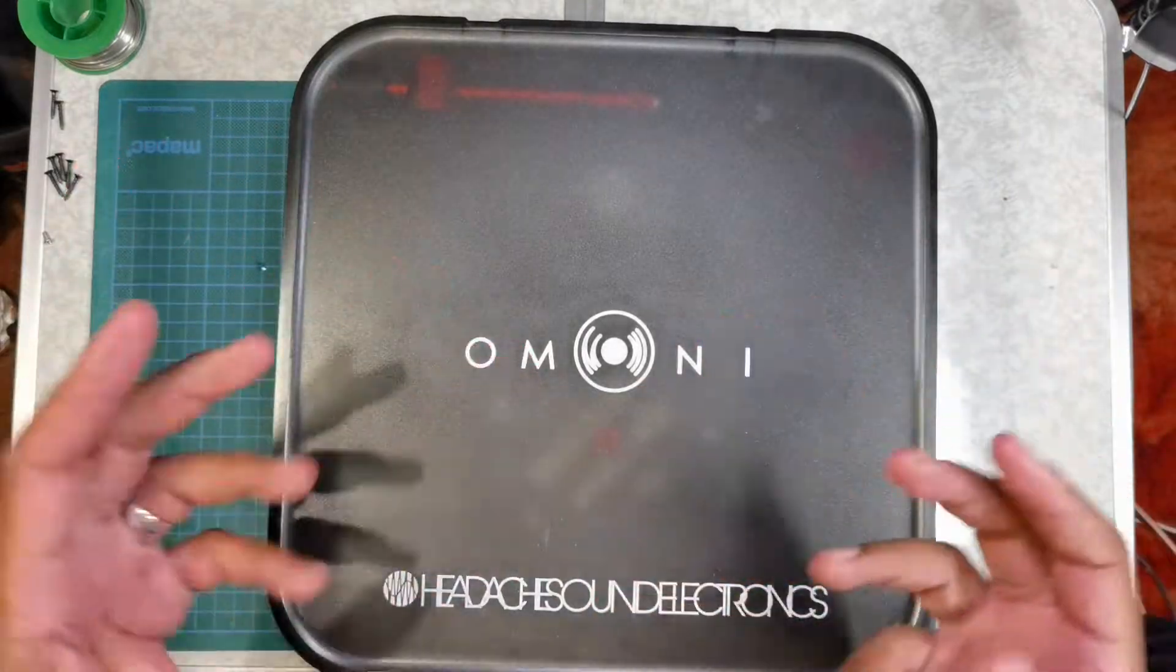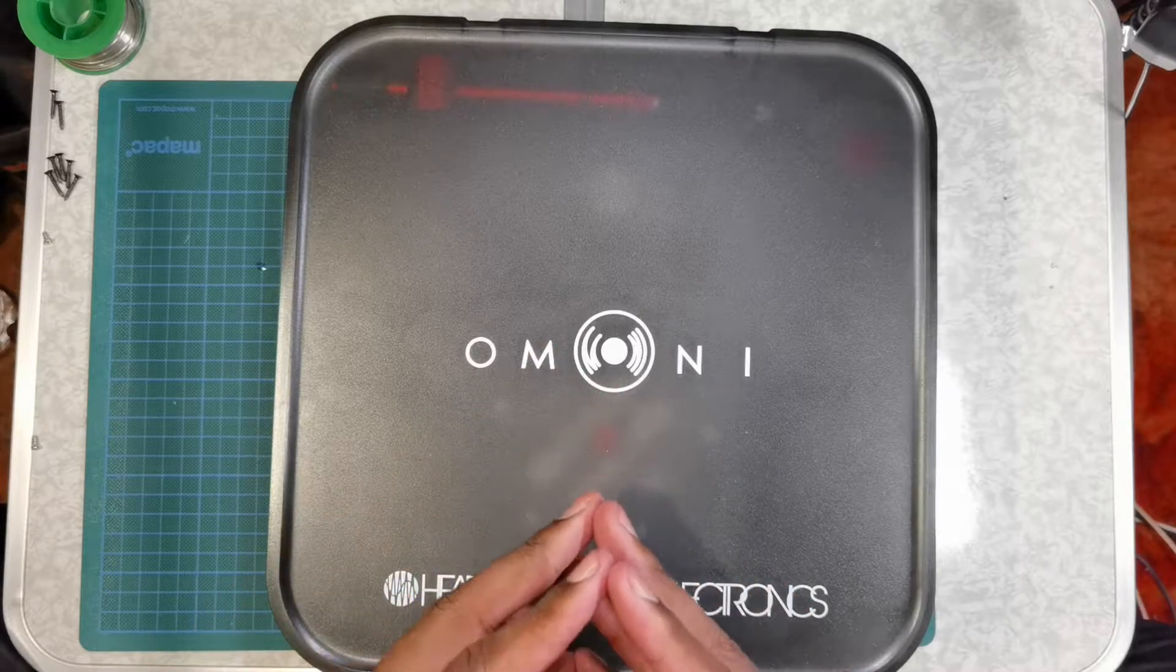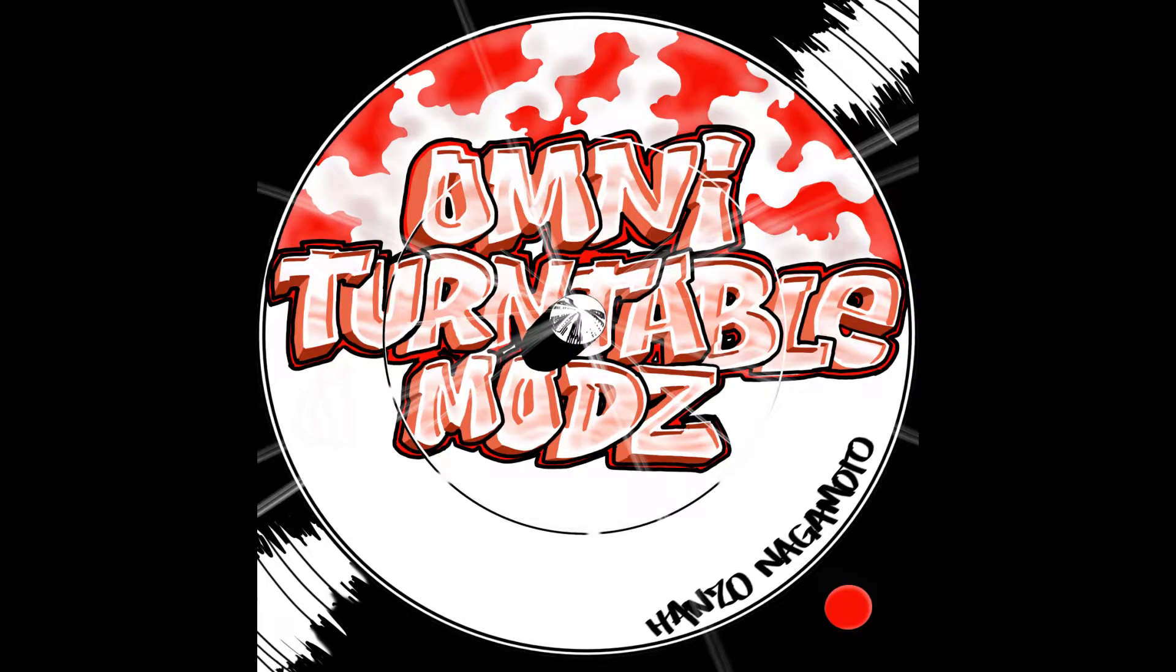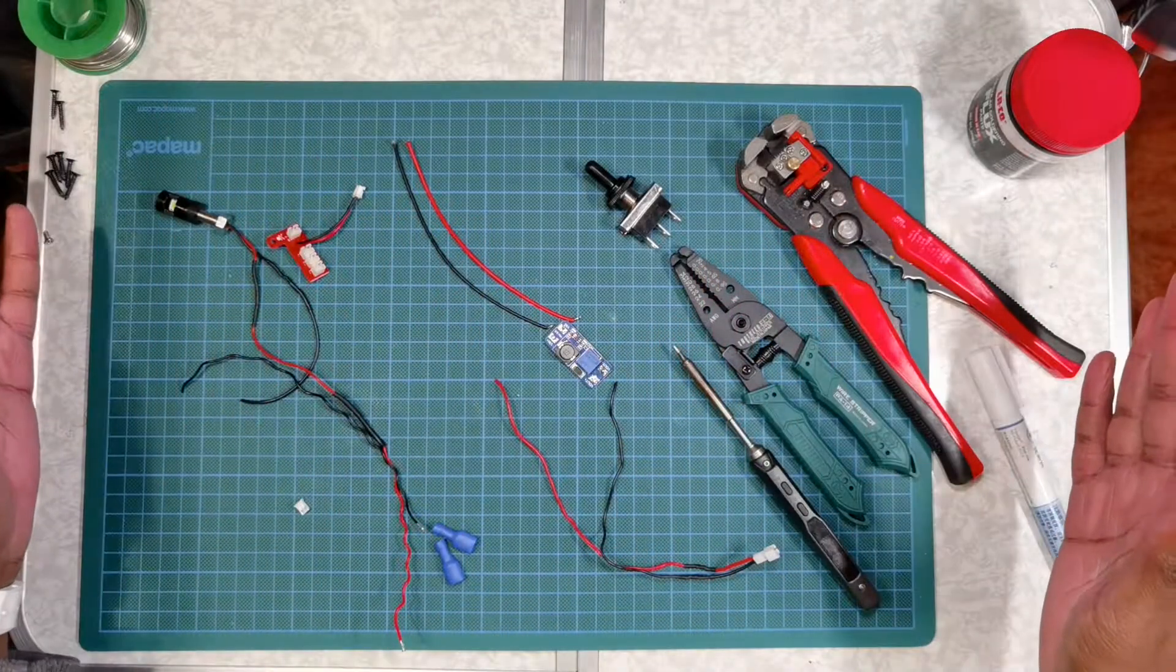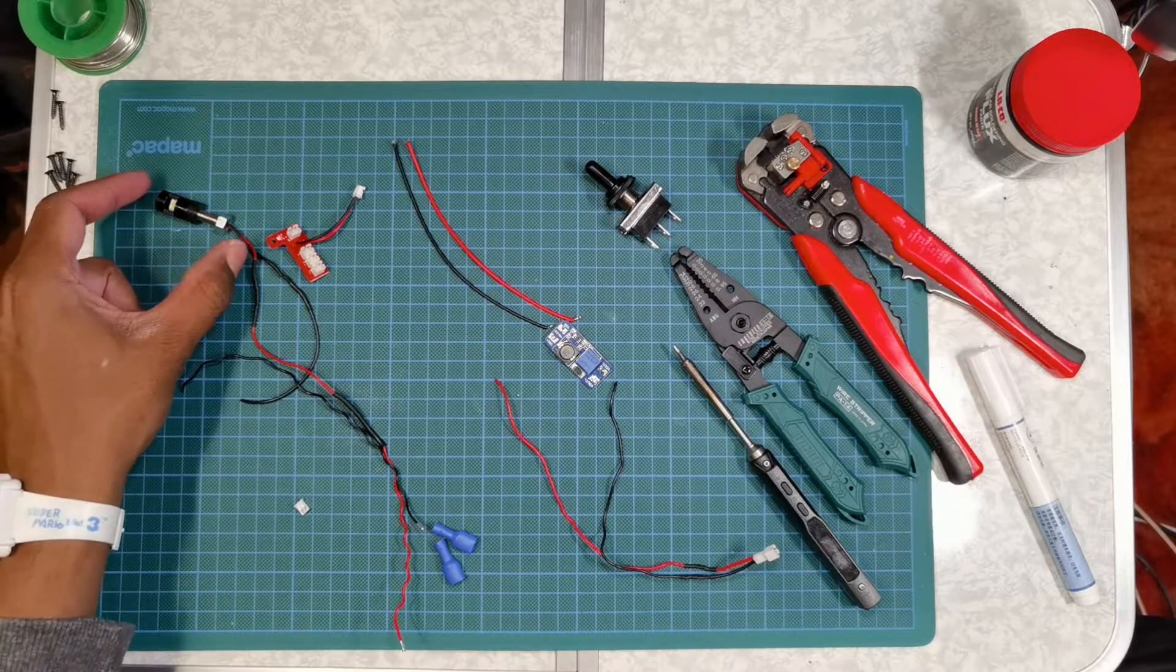Howdy y'all. Today I'm going to show you how you can install Jesse Dean's target light on your Omni turntable. All of this is what you'll need to install the target light on your Omni.